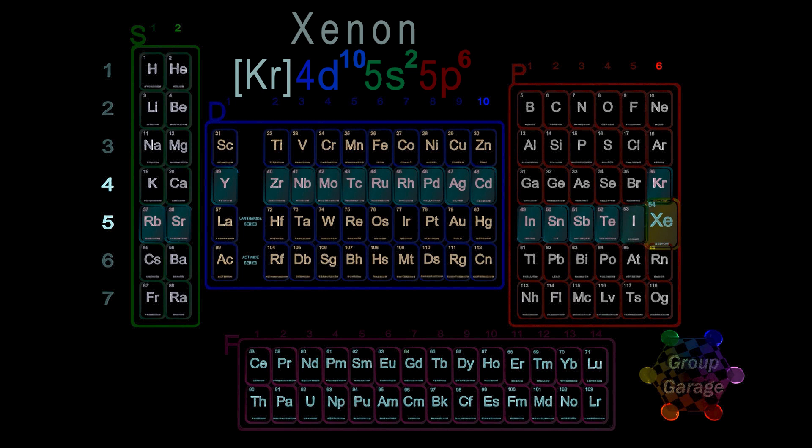The full configuration is: Krypton, 4D10, 5S2, 5P6. For when we do the next row in the table, we will now write the configuration through xenon in shorthand as Xe.